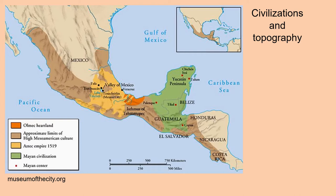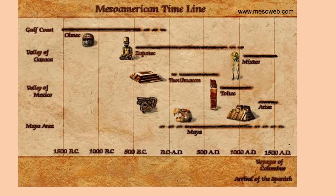This map shows the limits of the various civilizations I will be talking about. Note the Olmec heartland along the coast, just south of Veracruz. The approximate limits of the upland high Mesoamerican culture, including Teotihuacan and the Aztec Empire. And then in green, the Mayan civilization.